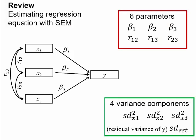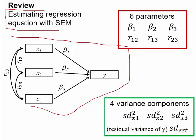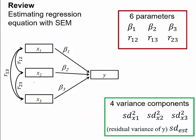Let's review how we can estimate regression equations using structural equation modeling. Here is a picture of a regression model from our previous unit, where we have three predictor variables — x1, x2, and x3 — and a single outcome variable y. This is a multiple regression equation with three predictors and one outcome.